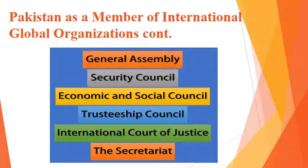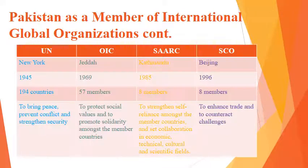The different organs of the United Nations are: the General Assembly, Security Council, Economic and Social Council, Trusteeship Council, International Court of Justice, and the Secretariat. Regarding UNO details: its headquarters is in New York. Pakistan became the 56th member on 30th September 1947. The United Nations was established in 1945, and currently has 194 member countries. Its purpose is to bring peace, prevent conflict, and strengthen security.